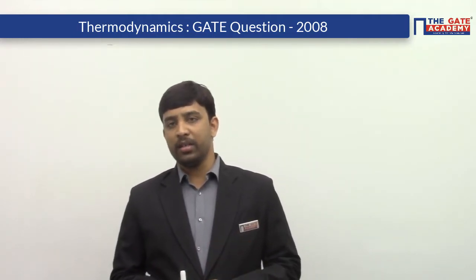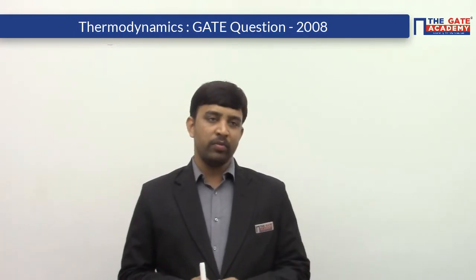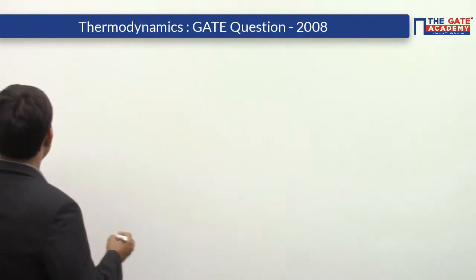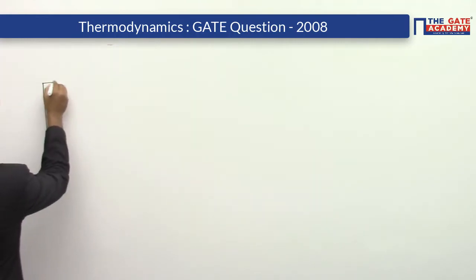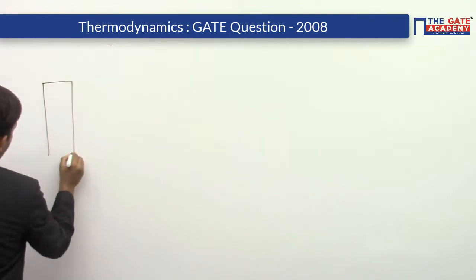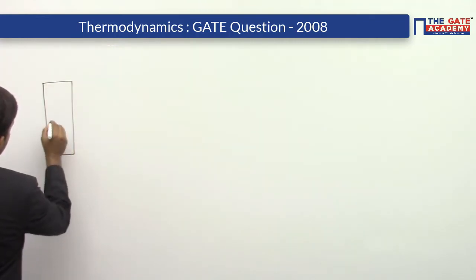In this video we will see how to solve the problem when it is from an unsteady state. Before going to the problem, first let us see how to write the energy balance equation and mass balance equation for a control volume. Here I am considering a control volume — this is the control volume.